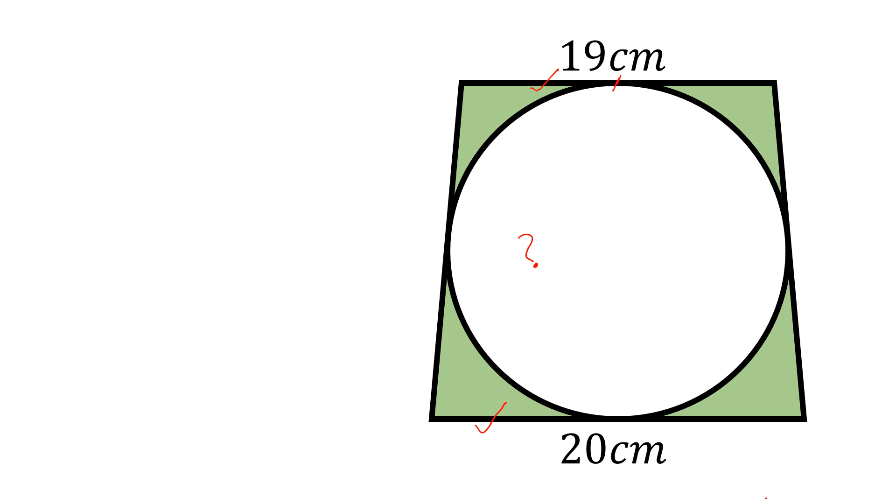We know that from here to here, this length is equal to this length. This will be 19 by 2, so this will be also 19 by 2. Similarly, from here to here and from here to here, this length will be equal to 10, so this length will be also equal to 10.